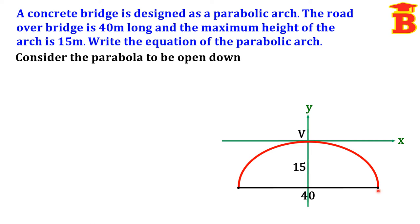We can now mark the two points. Since the horizontal distance is 40 and the vertex is at the origin, we divide 40 into two parts: 20 and 20. From the center, the right side is 20. The height is 15, taken as minus 15 because this point is in the fourth quadrant — x distance 20, y distance minus 15. Similarly, the other point is in the third quadrant, so we take it as minus 20, minus 15. We substitute one of these points to find the equation of the parabolic arch.